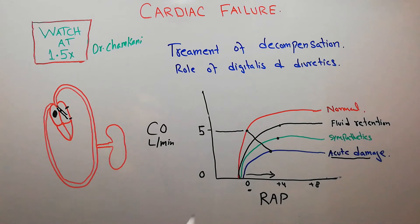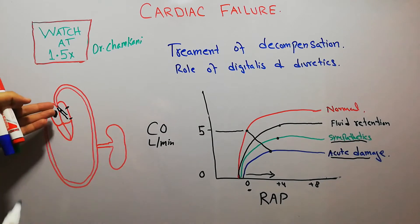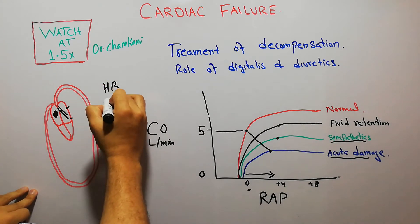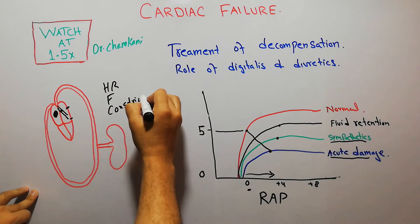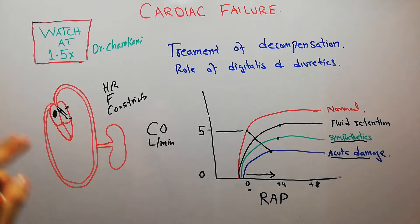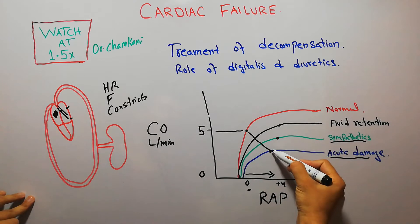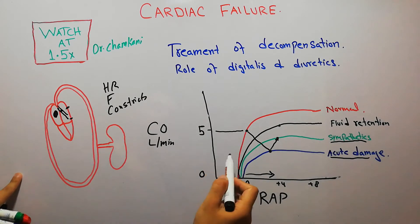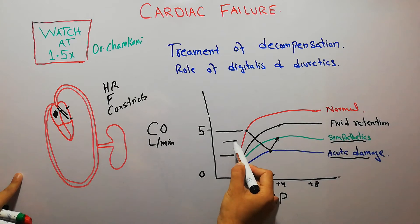Within a few seconds, the sympathetic system gets activated. The sympathetic system, coming from the brain and spinal cord, increases the heart rate and the force of contraction of the heart. It also constricts peripheral vessels and pushes more blood towards the heart. Due to these effects, the cardiac output increases a little bit from the acute damage point.